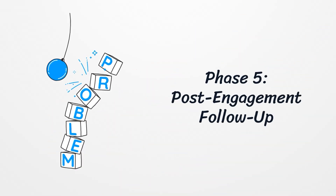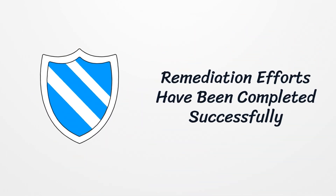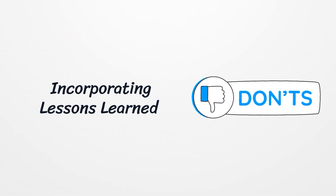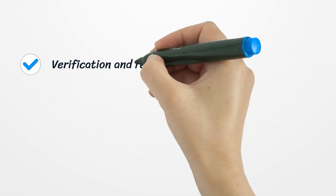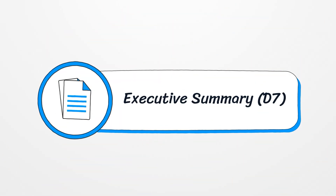Finally, Phase 5 is Post-Engagement Follow-up. This final phase verifies that all remediation efforts have been completed successfully. It involves re-testing to confirm vulnerabilities have been resolved. The methodology encourages continuous improvement by incorporating lessons learned into future tests. Activities include verification and re-testing, updating the testing methodology based on outcomes, and applying lessons learned to enhance future engagements. The main output is the Executive Summary (D7), a clear, non-technical report designed to communicate risks, actions, and recommendations to stakeholders.